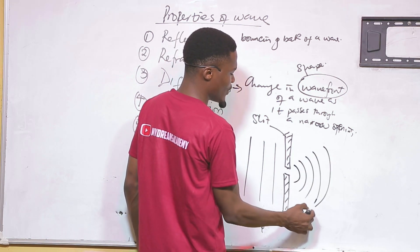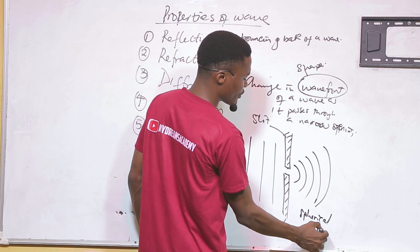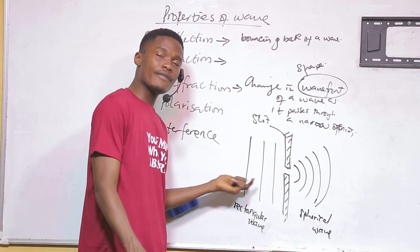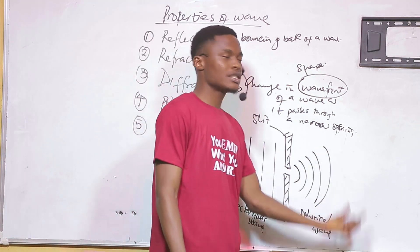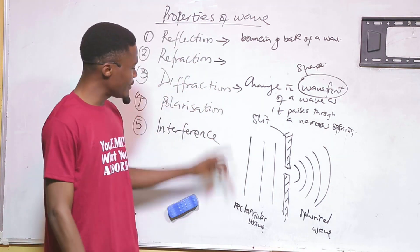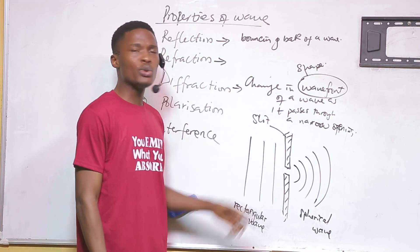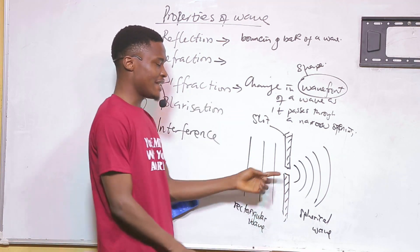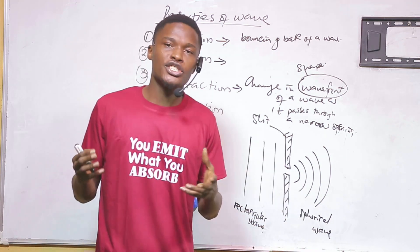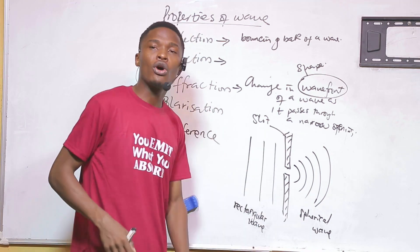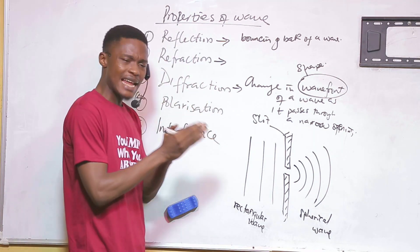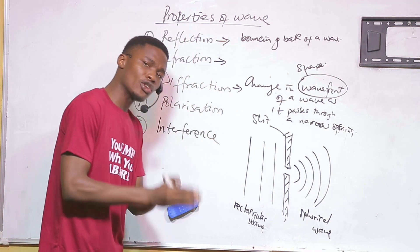After passing through the narrow slit, the rectangular wave becomes a spherical wave — this is what we call diffraction. The key point is that diffraction occurs when the opening is small enough. If you expand the opening, the wave will pass through and nothing will happen to its shape. Diffraction occurs when the opening is small enough.